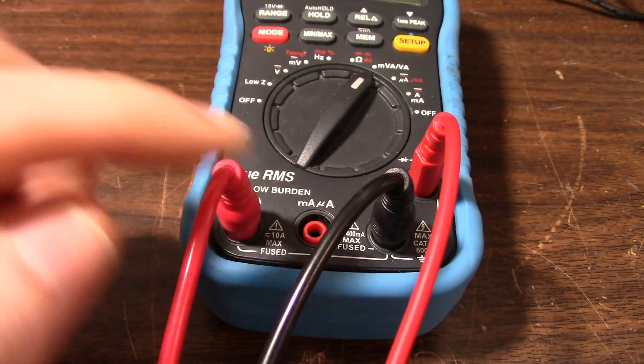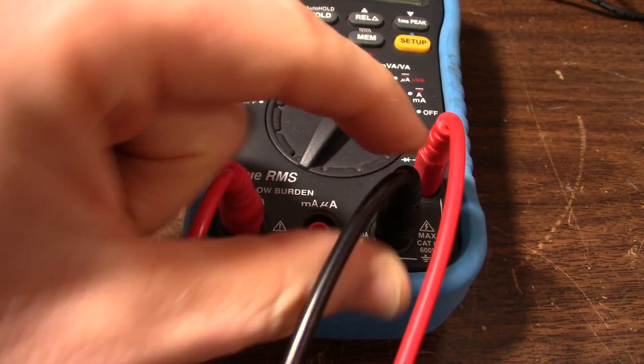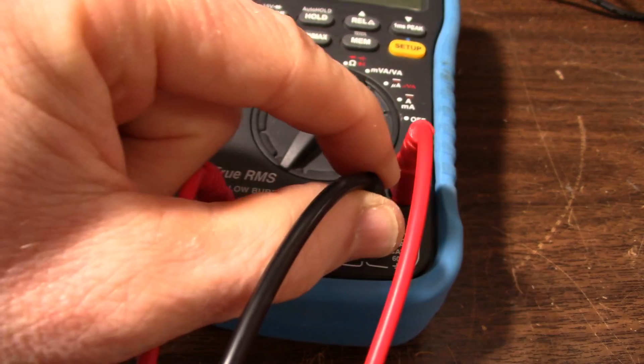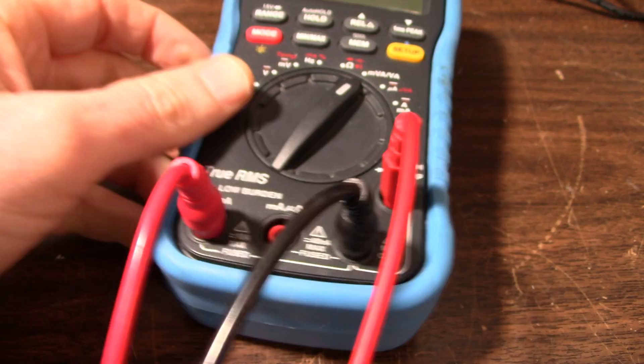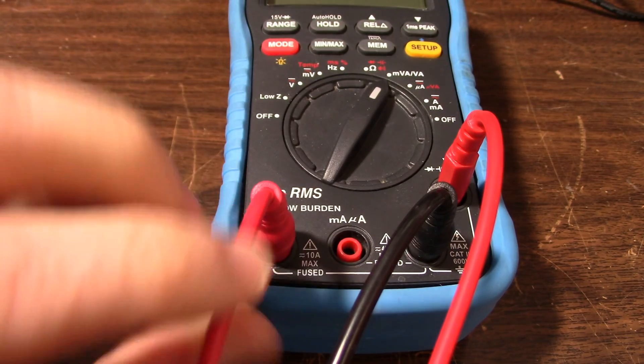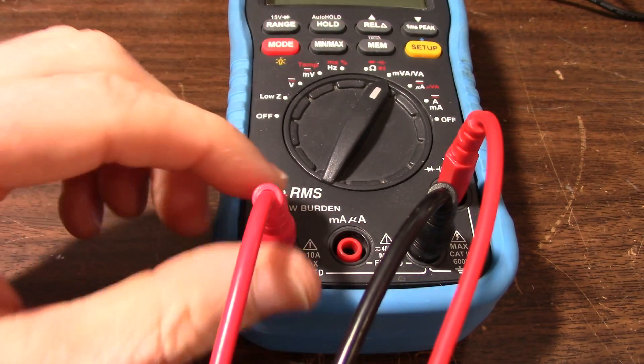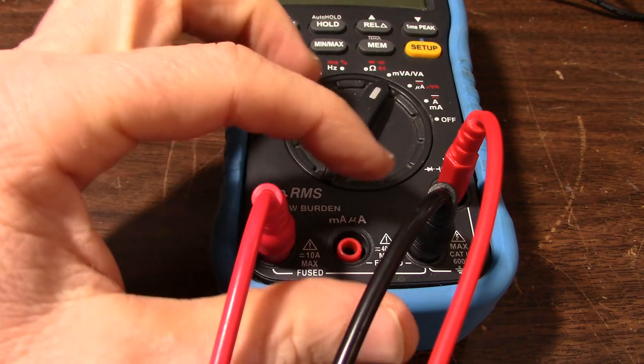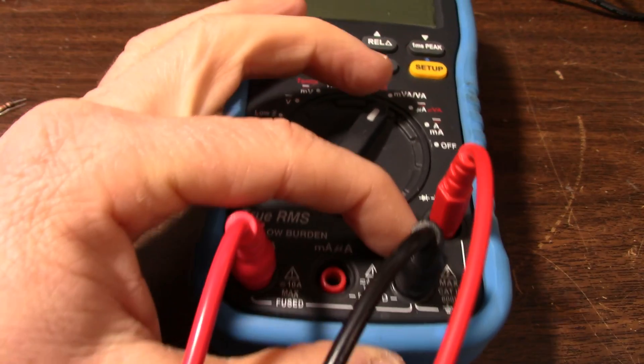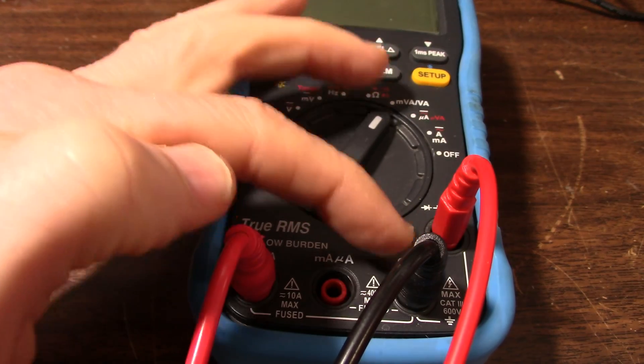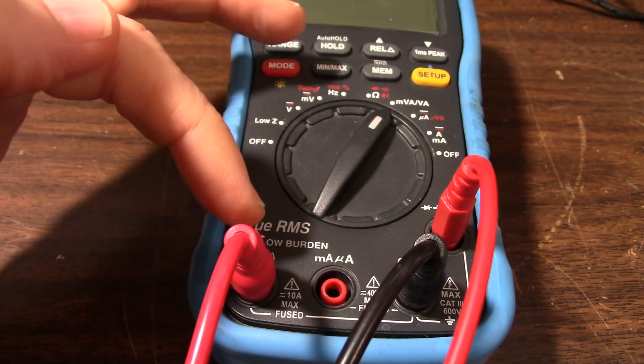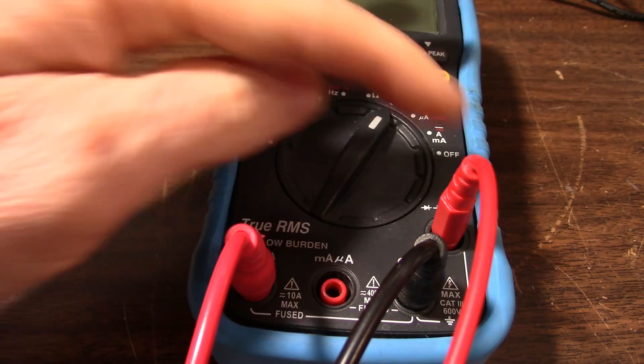It's a three lead measurement where you need a common point. So you have your common lead here, your voltage sensing lead, and a current lead to carry the current. So you have to have a common point in your circuit to put the negative or your common lead and another point for the current and of course the voltage.